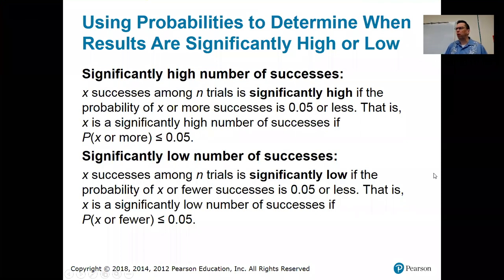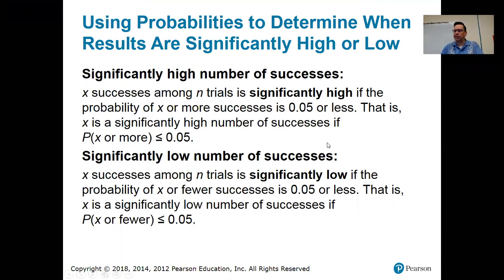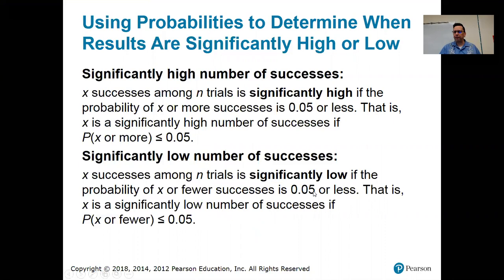X successes is significantly high if the probability of getting that many or more is 0.05 or less. We found that the probability of 252 or more successes was only about 2.25%, which is less than 0.05 — confirming that number is significantly high. Similarly, a value is significantly low if the probability of X or fewer successes is 0.05 or less.